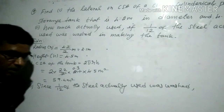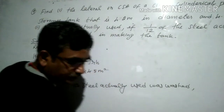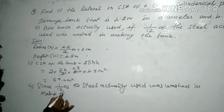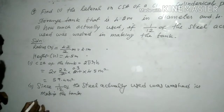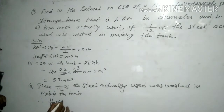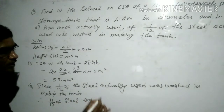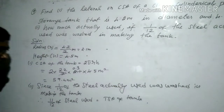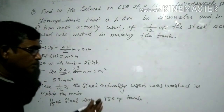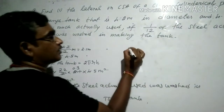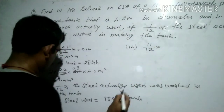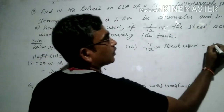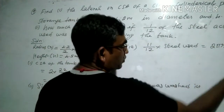Since one-twelfth of the steel actually used was wasted, that means 11/12 of the steel was used in making the tank. So 11/12 of the steel used equals the total surface area of the tank. The formula for TSA is 2πr(h + r).